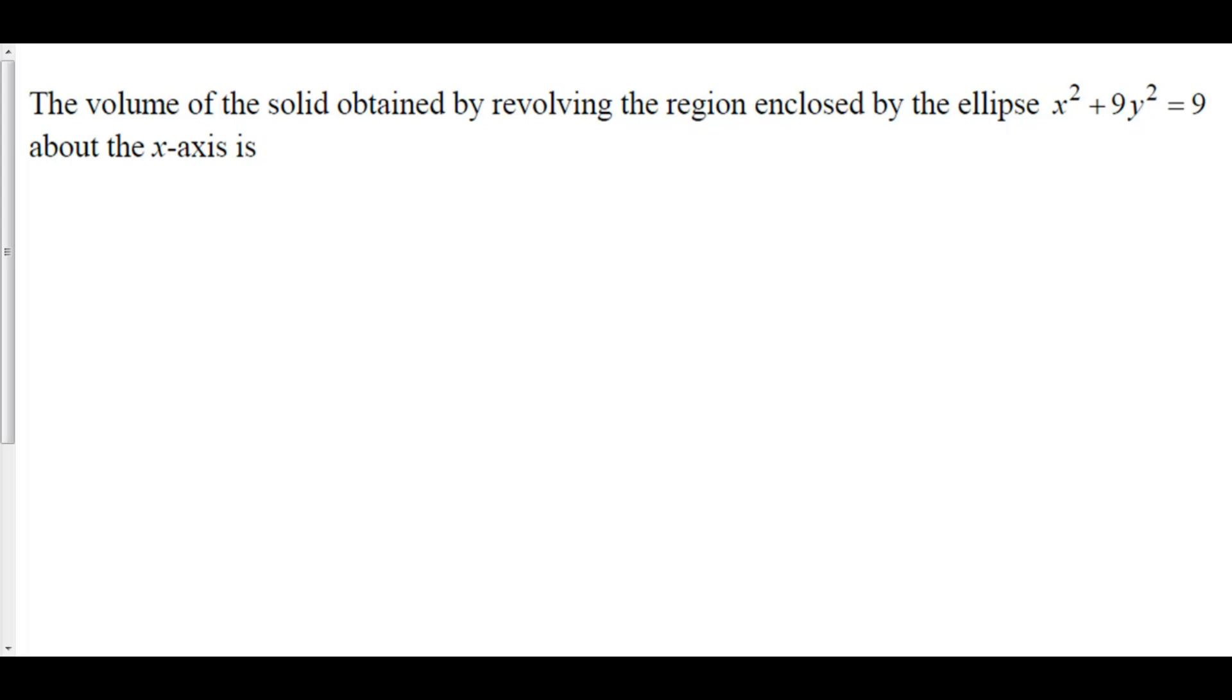The volume of the solid obtained by revolving the region enclosed by the ellipse x squared plus 9y squared equals 9 about the x-axis is what? First, let's graph this ellipse. We'll divide everything by 9, so we have x squared over 9 plus y squared over 1 equals 1. This is the ellipse centered at 0, 0.